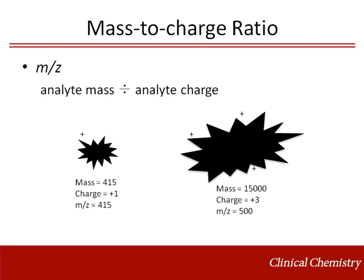With the mass of our analyte known, we need to decide what type of mass spectrometer to use for analysis. Single quadrupole and triple quadrupole mass analyzers are the most common mass spectrometers found in the clinical laboratory, but it's important to recognize that laboratories are also using time-of-flight analyzers for specific applications. Although every type of mass spectrometer uses the same charged ions, how it separates individual analytes varies greatly.